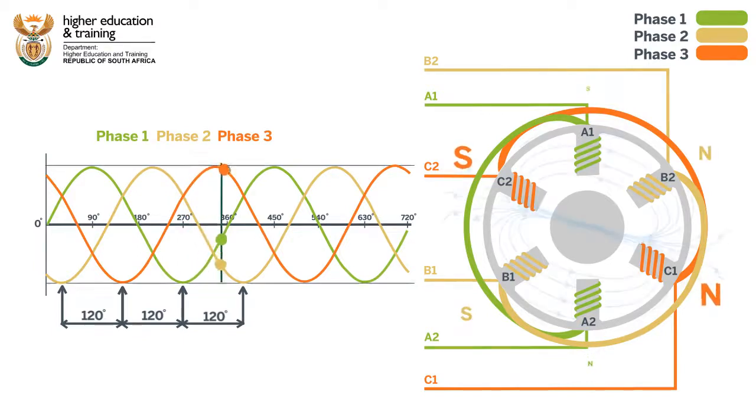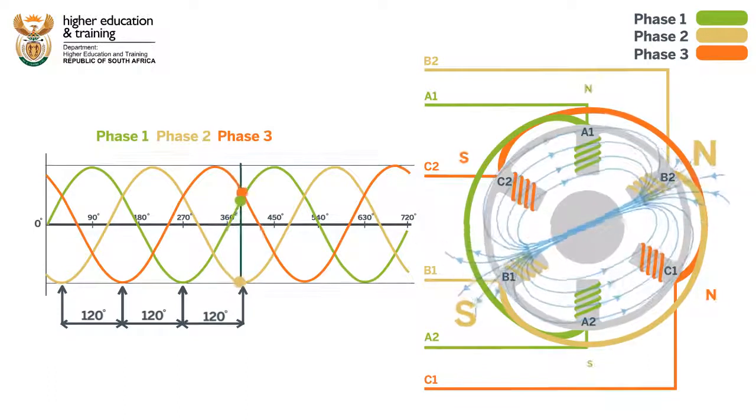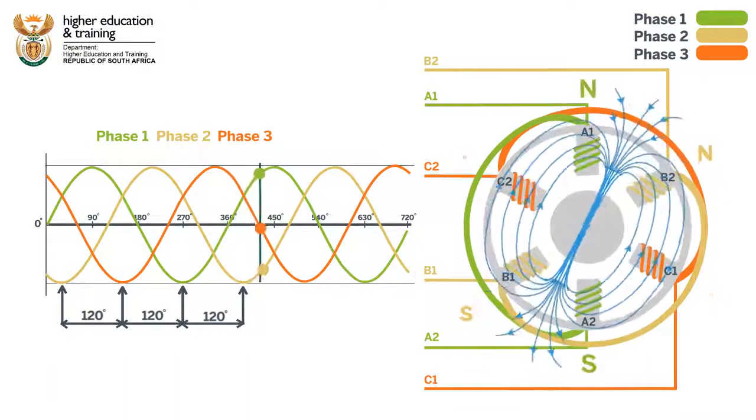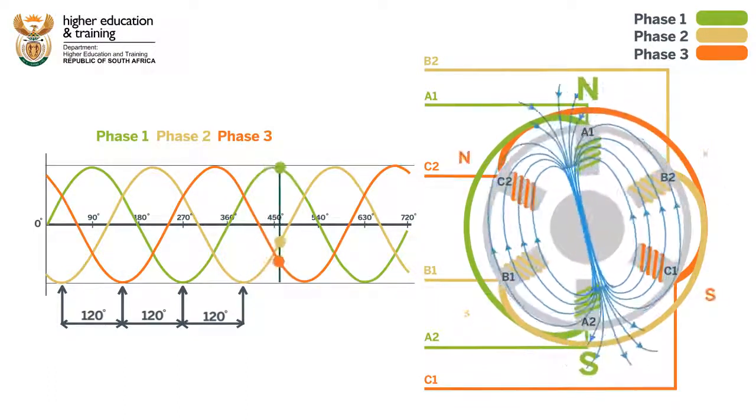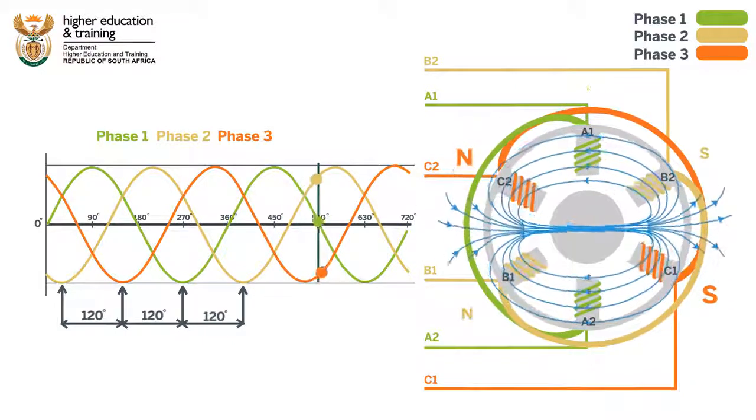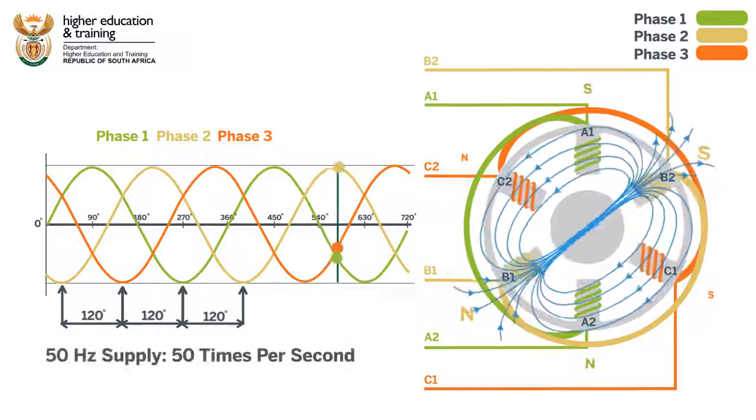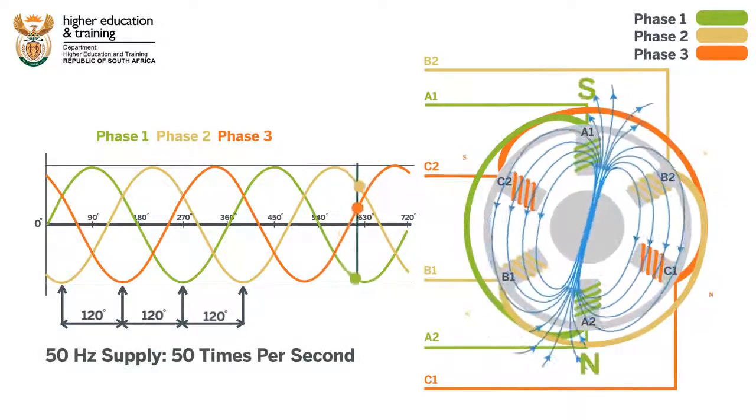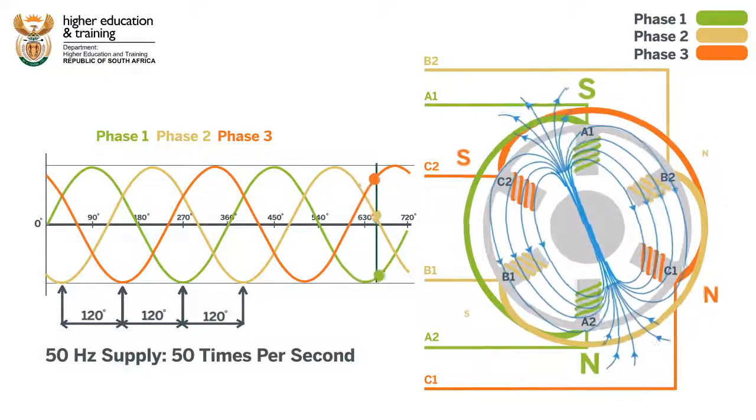The overall effect is a rotating magnetic field around the stator. The speed of this rotation is the same as the period of supply. In other words, a 50 Hz supply will cause the field to rotate 50 times per second.